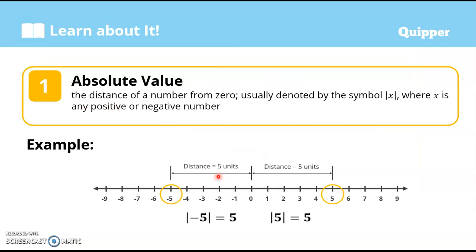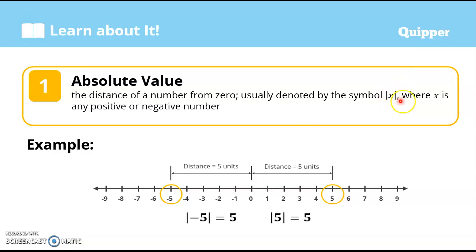So, absolute value. The distance of a number from zero is referred to as the absolute value. It is denoted by this symbol — two straight vertical lines with the number inside. X here represents any number; it could be positive or negative. This is read as the absolute value of x.